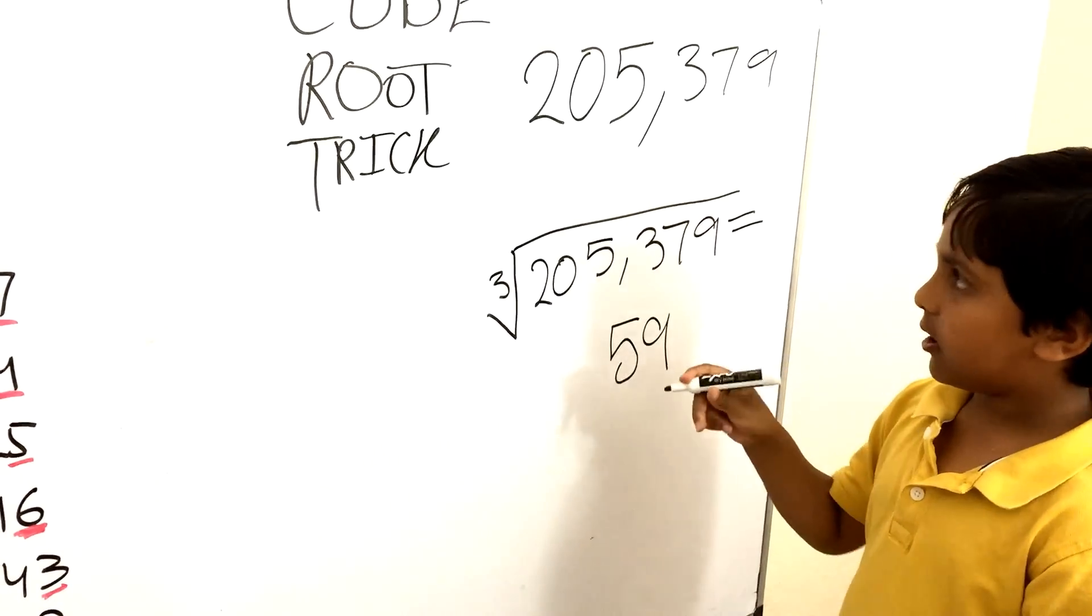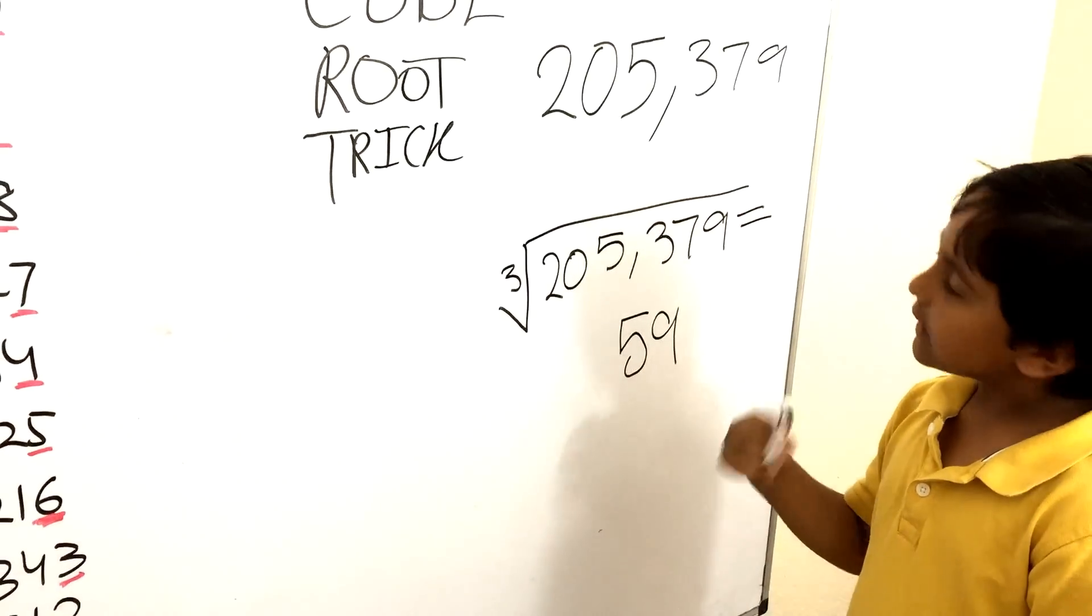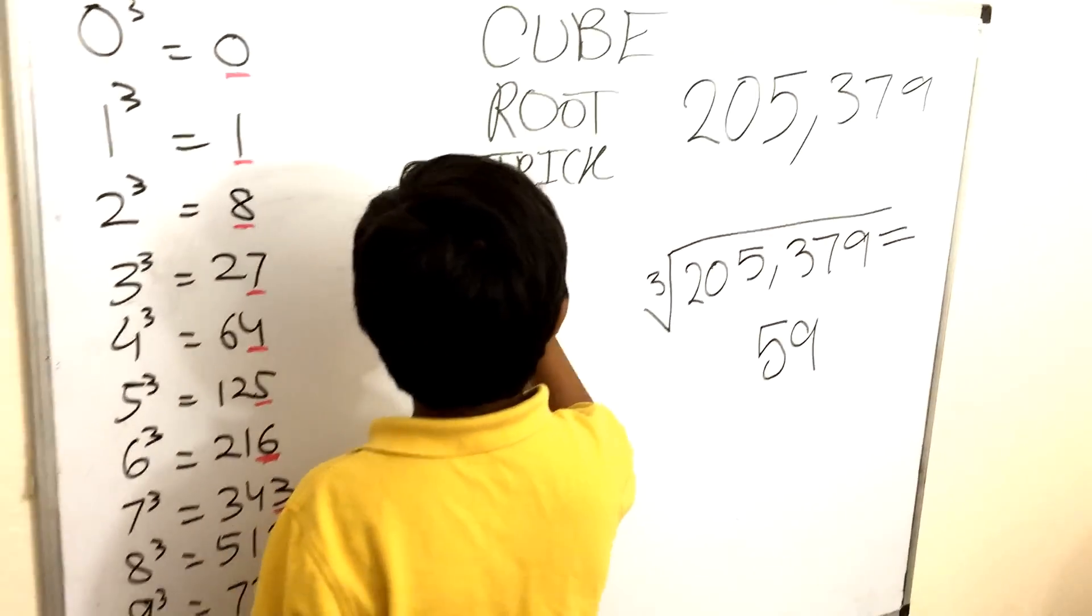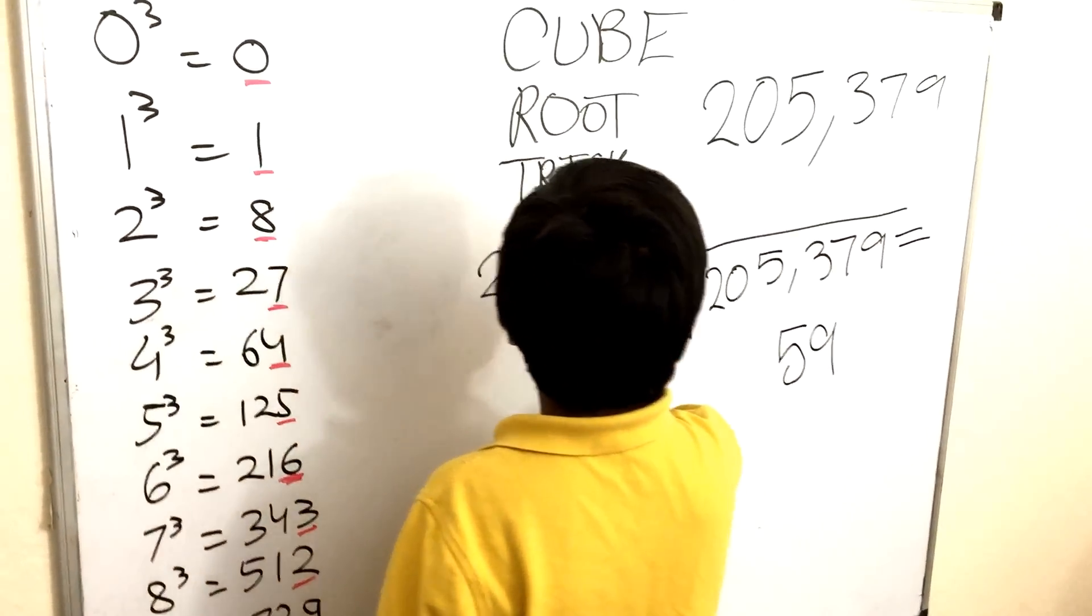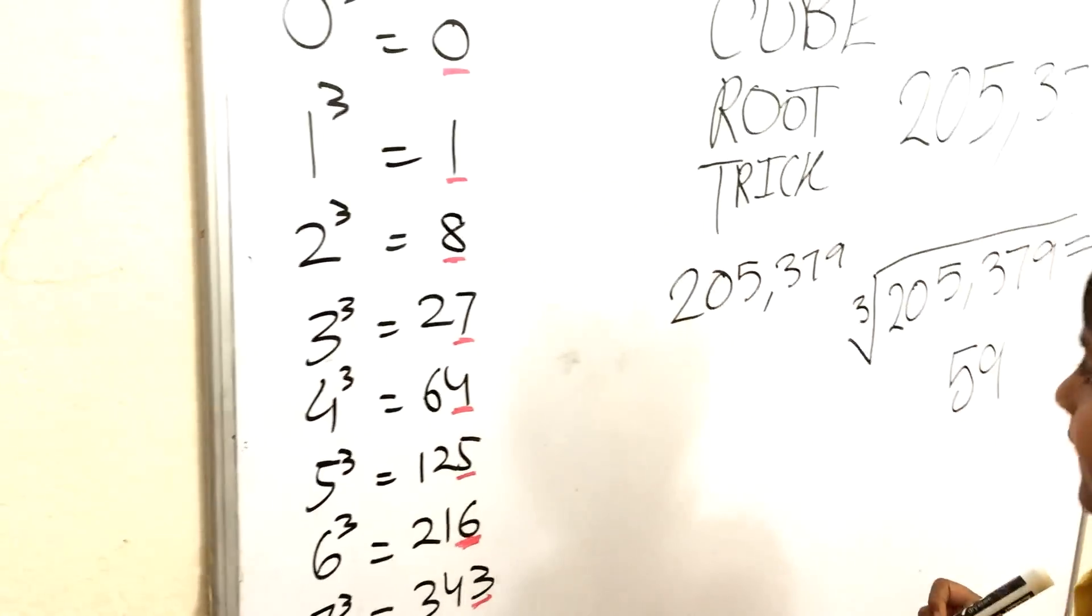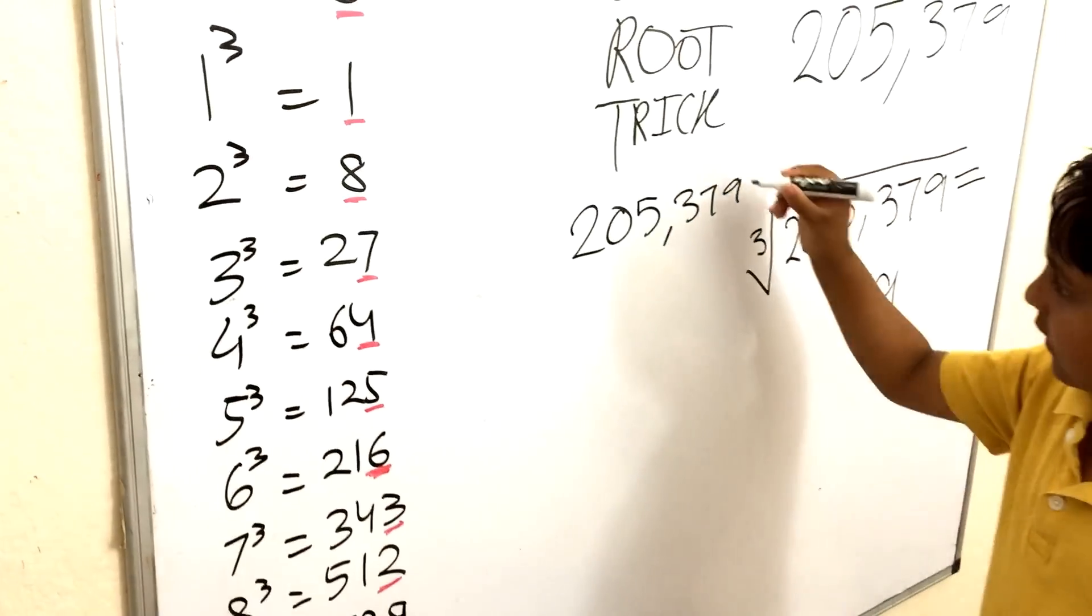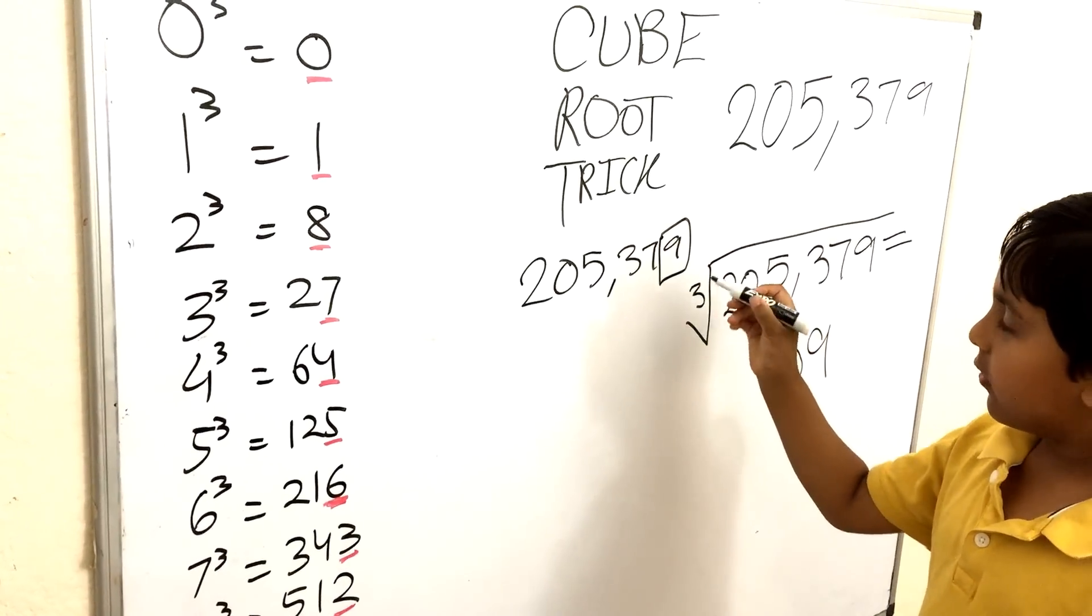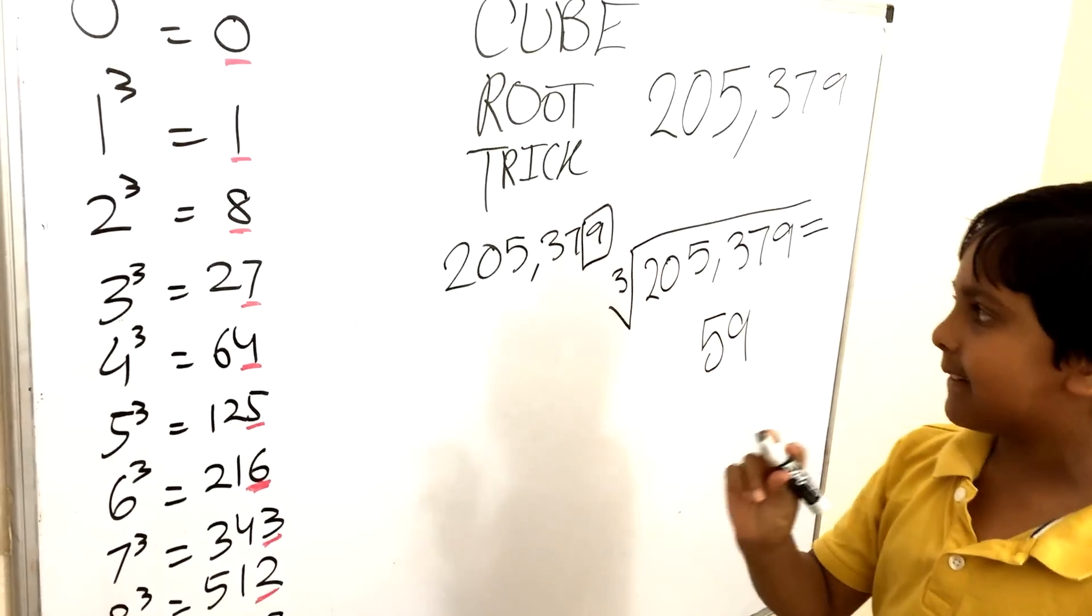And now once you've memorized those, I'll write down the cube again. And let's get started breaking the cube root. Okay, there it is. Look at this last digit of the cube. So the last digit of the cube is a 9.